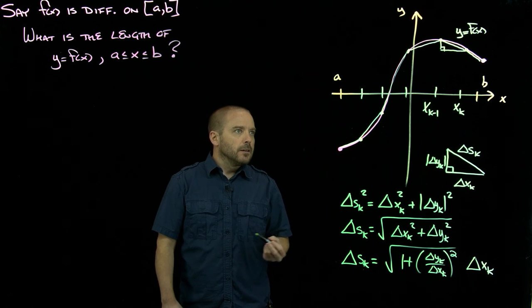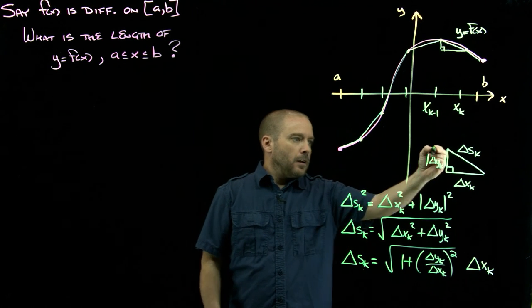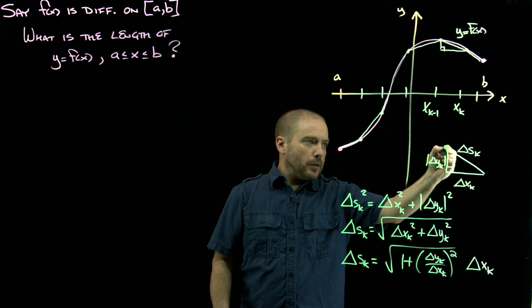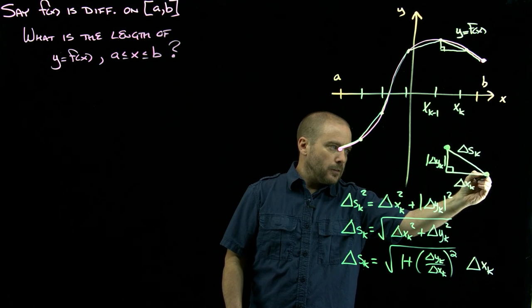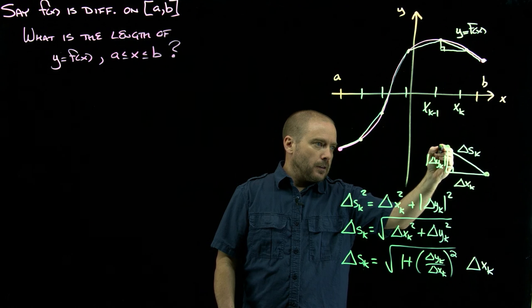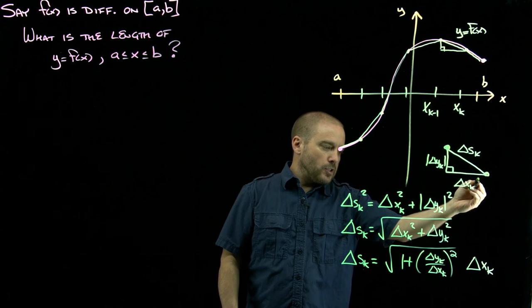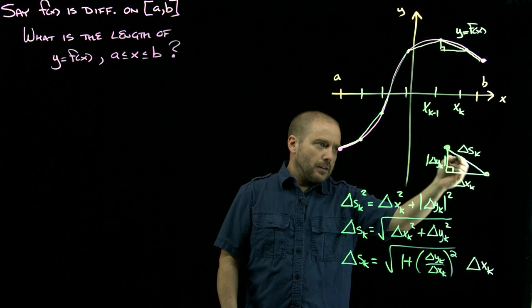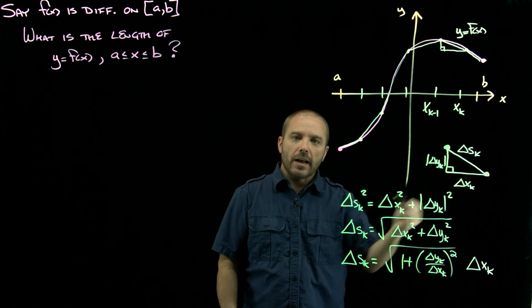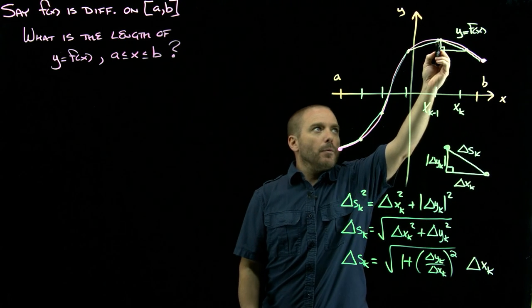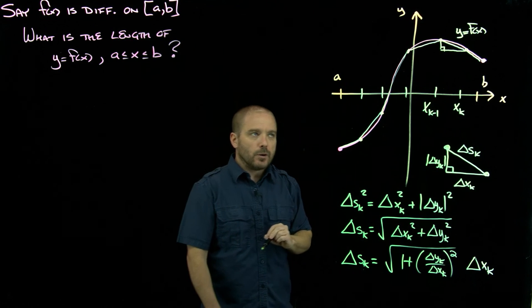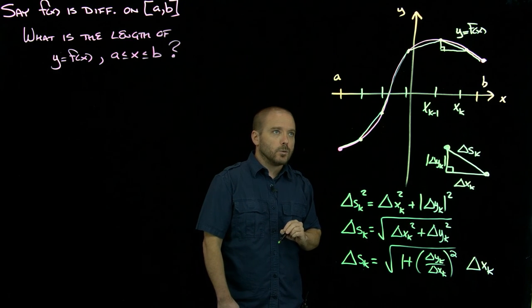Now we're almost there. We have to deal with this delta y sub k over delta x sub k. What is that? Well, as we moved from here to here, that's change in y over change in x. That's actually the slope of that secant line. Remember when we connect two dots on the curve, we called that the secant line in calc one.